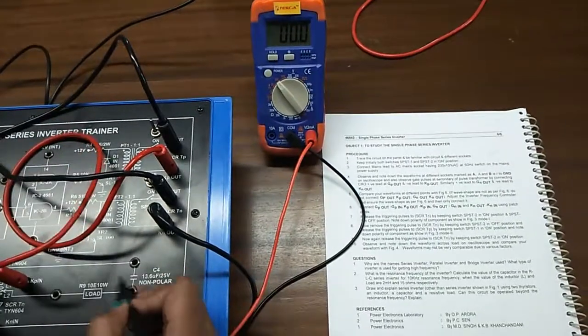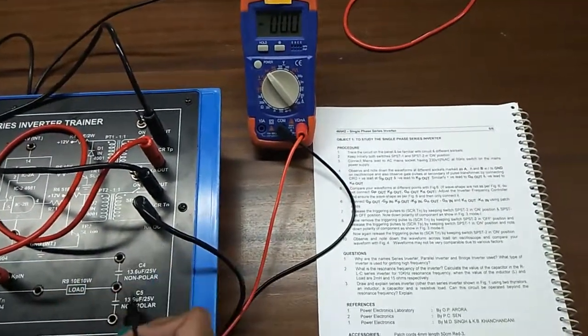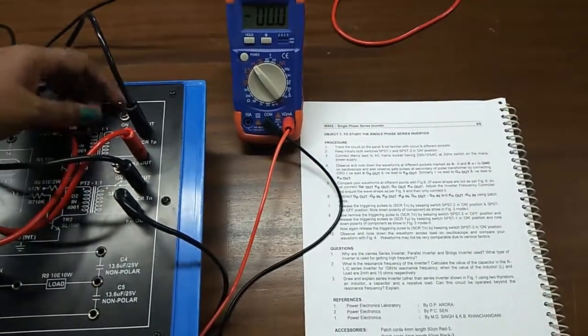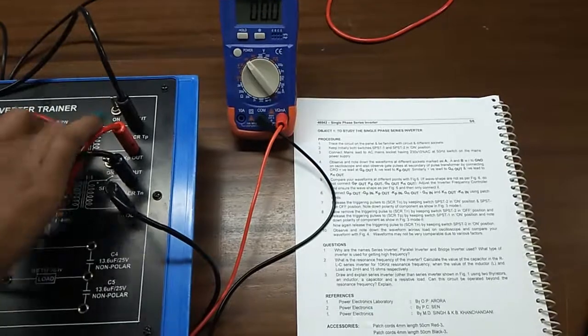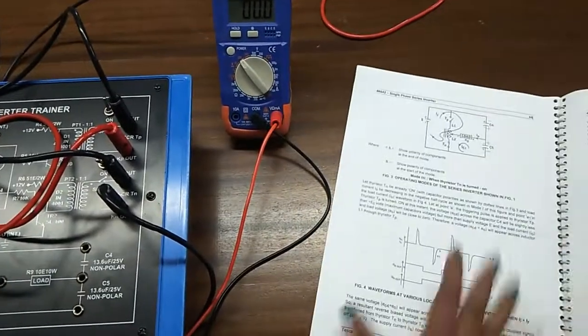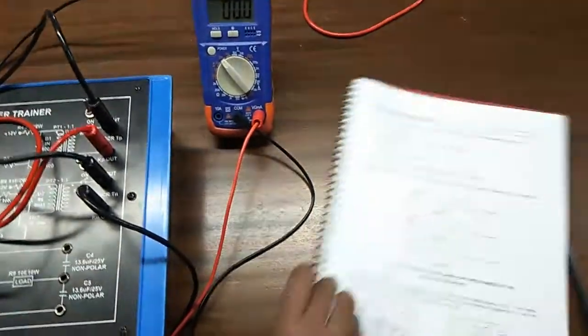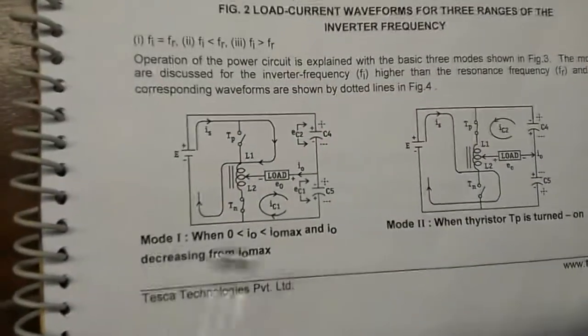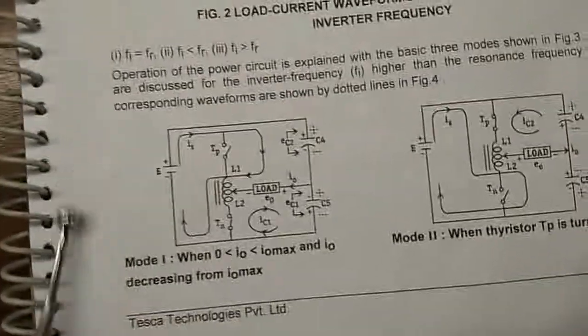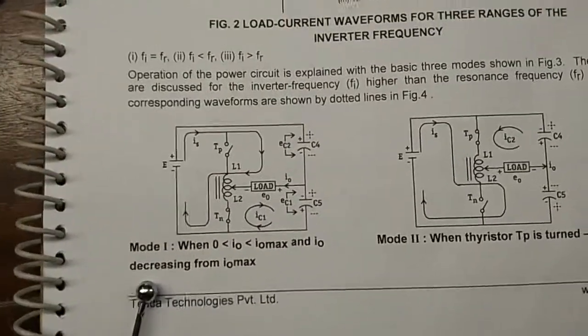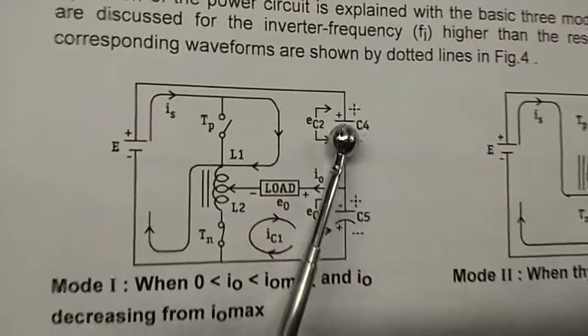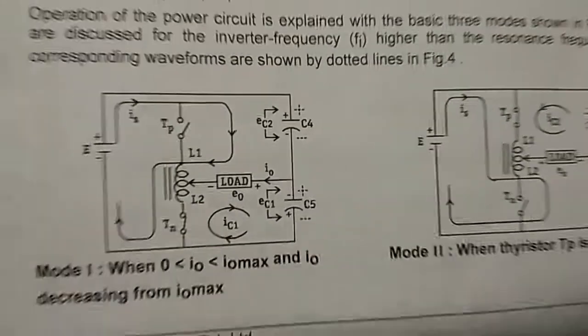This portion is in on position and this portion is in off position because we have put this SPST 1 switch in off position. This is the circuit for mode 1. Here you can see this capacitor C4 is plus and this is minus.